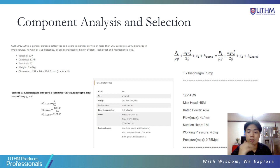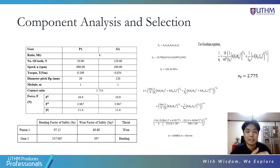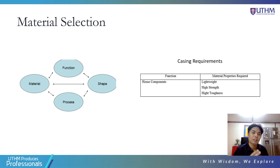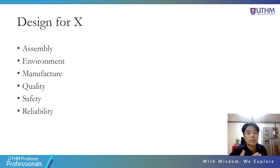The motor must be able to provide enough torque to the shaft. Mechanical components such as the gear and the shaft are selected based on analysis of their safety factor. For example, the pinion and gear are threatened by wear and bending respectively. The shaft has a safety rating of 2.775, which is good because it is above the required rating of 1.5. This is how fasteners such as bolts and nuts are chosen as well. Material selection is also very important as it relates to function, shape, and process. For the casing, the material needs to be lightweight, high strength, and high toughness. We also integrate Design for X (DFX), where assembly, environment, manufacture, quality, safety, and reliability are taken into account. That is all from me. Thank you.